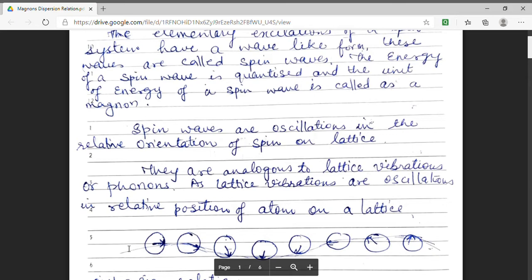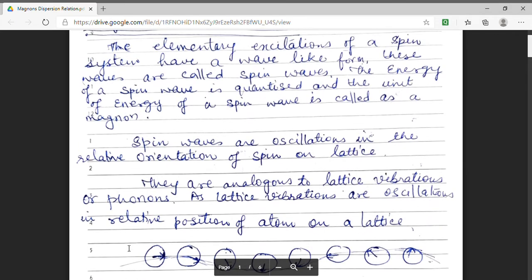And this wave which is found by the variation in direction of spin is termed as spin waves. Hence, we can say the excitation of a spin system, they have a wave-like structure and this wave-like structure is termed as spin waves.